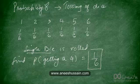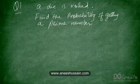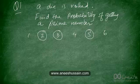Now let's try a question based on this idea. The question says: a die is rolled, find the probability of getting a prime number. Let's go back to the basics of probability. The probability of an outcome is the number of favorable outcomes divided by the number of all possible outcomes. So when you look at the numbers 1, 2, 3, 4, 5, and 6, which of these are prime numbers? The prime numbers are 2, 3, and 5.